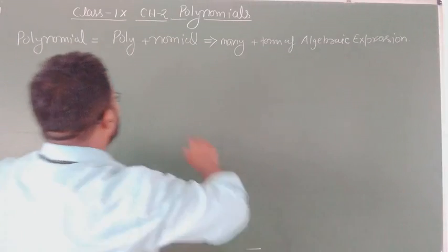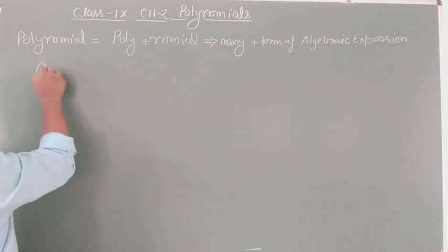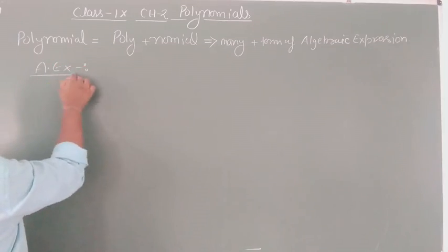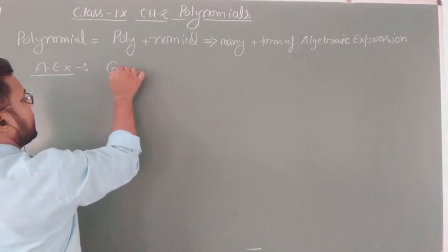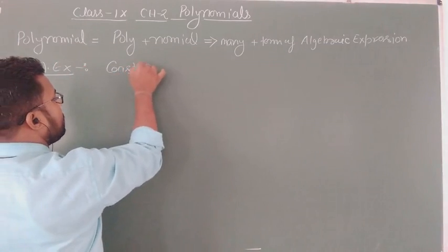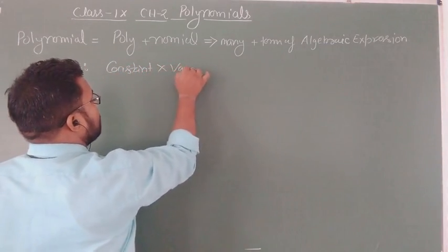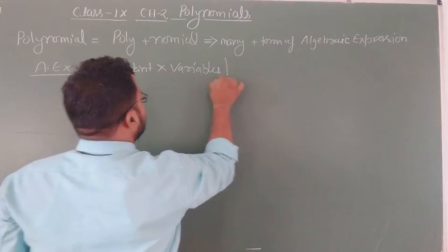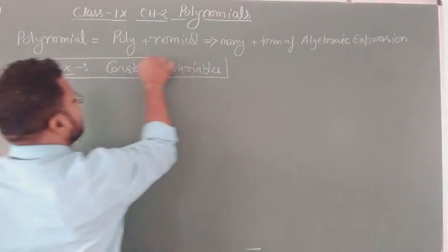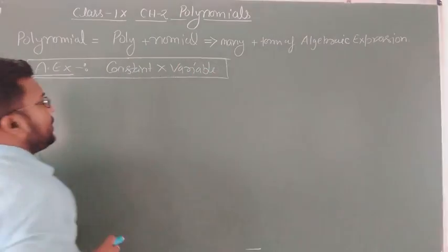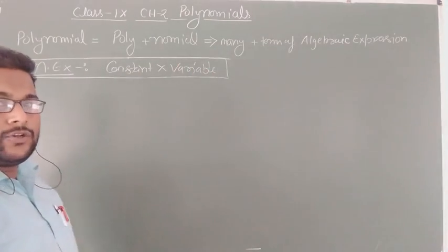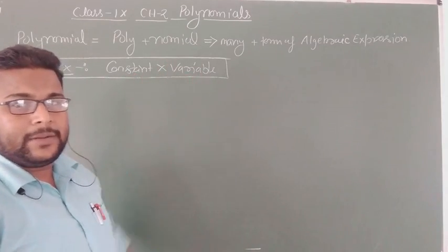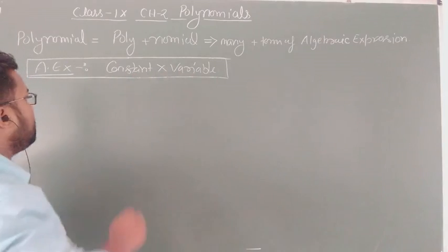So first of all, what is the algebraic expression? An algebraic expression is defined as constant into variable. The combination of constants and variables is what defines a polynomial.